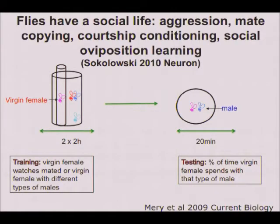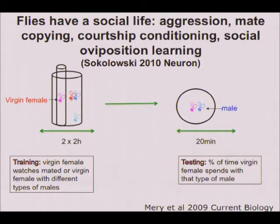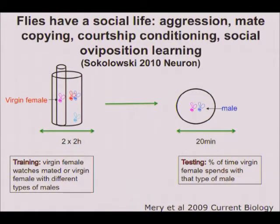I need to convince you that flies are really cool — and that they have a social life. When I started this work in the 1970s, I never dreamed how complex their social life was. A naive female watching another female choose between two males will subsequently prefer the mate her experienced counterpart chose. Males fight and behave differently depending on whether they won or lost. In courtship conditioning, a naive male repeatedly courts a mated female who keeps kicking him — eventually his courtship is suppressed. He's learned to avoid her.